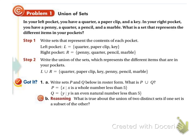So here's just another example. In your left pocket, you have a quarter, a paper clip, and a key. In your right pocket, you have a penny, a quarter, a pencil, and a marble. So it's written out over here. This is a set that represents the different items in your pockets.